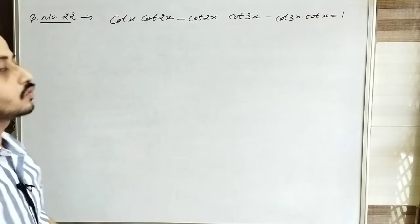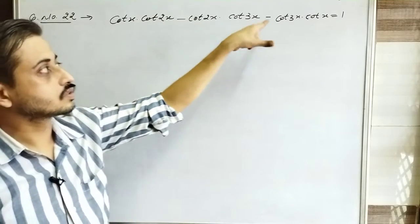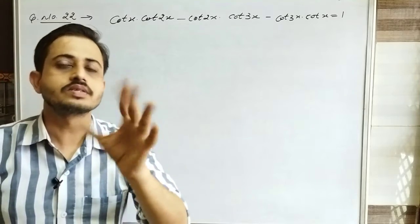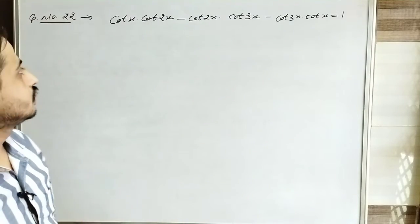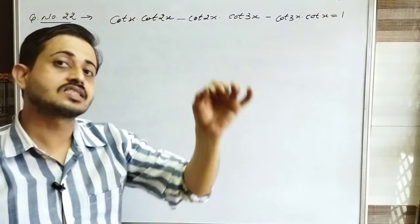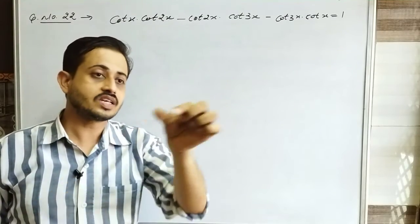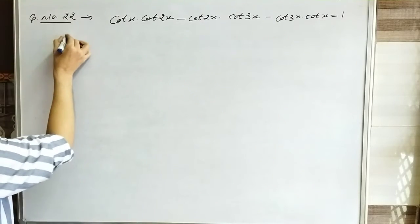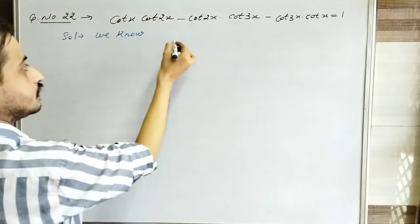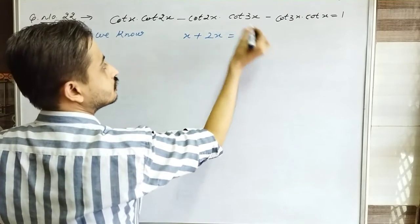Question Number 22: Prove cotx·cot2x - cot2x·cot3x - cot3x·cotx = 1. This question is very important. Notice that angles x, 2x, 3x are related: x + 2x = 3x. We can use this concept — taking cot on both sides of x + 2x = 3x.